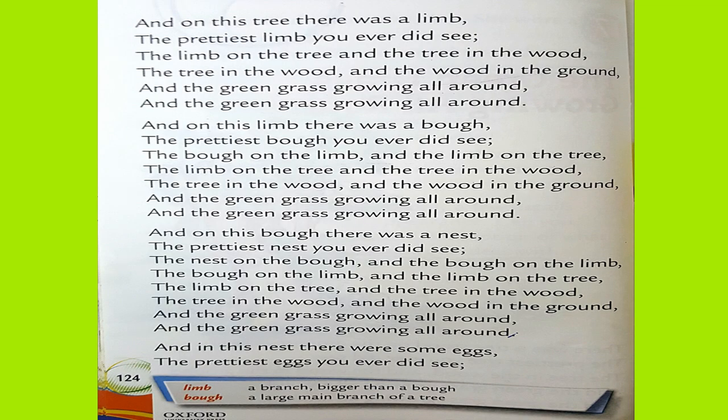And on this tree there was a limb, the prettiest limb you ever did see, the limb on the tree and the tree in the wood, the tree in the wood and the wood in the ground, and the green grass growing all around, and the green grass growing all around.